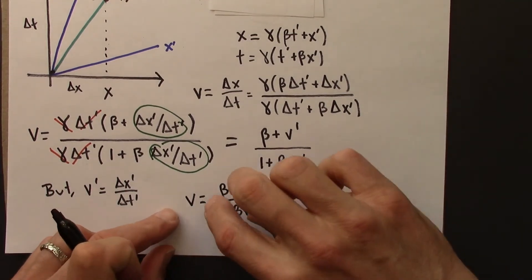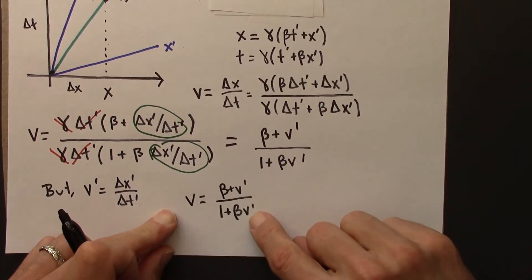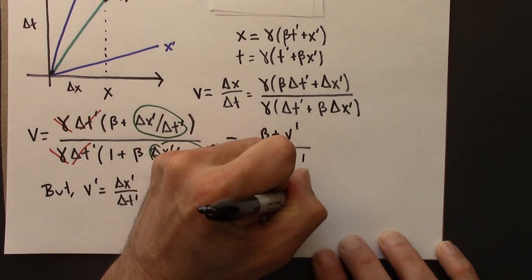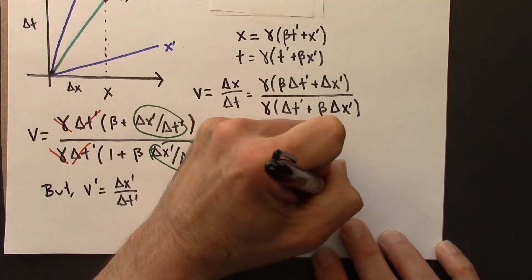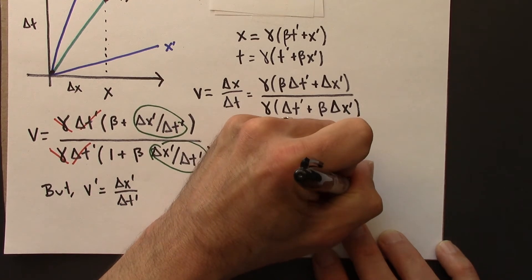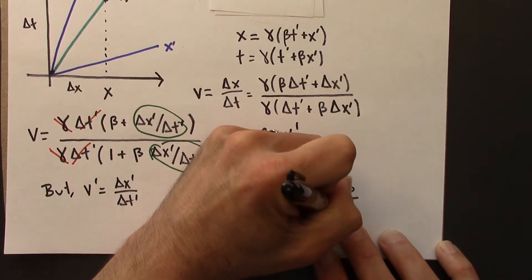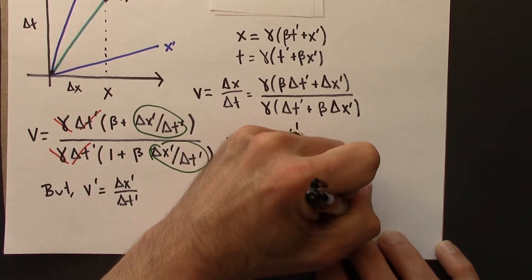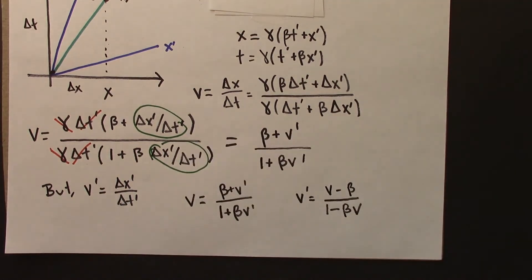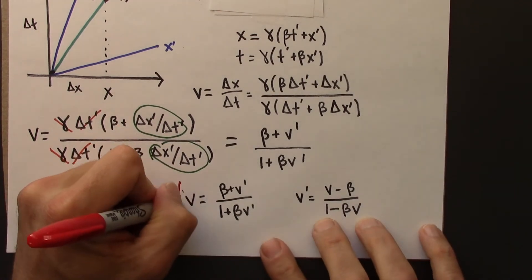So this would be if you know v prime and you want to figure out v. I could also just do some math on this, solve for v prime, and I could get this. This would be v minus beta over 1 minus beta v. So these are the relativistic velocity transformations.